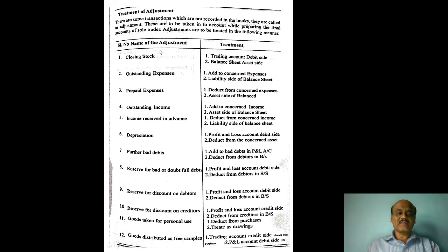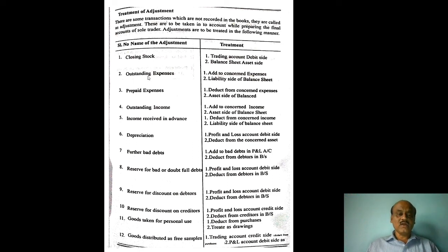When solving a 12-marks problem using the trial balance, you must compulsorily apply all adjustments: outstanding expenses, prepaid expenses, depreciation, outstanding income, income received in advance, further bad debts, and reserve for doubtful debts.